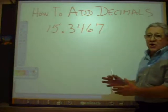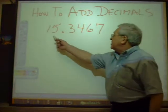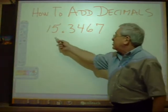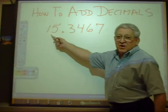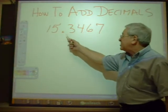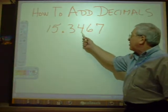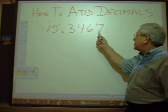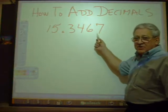If this is 15.3467, this one is in the tens place, the five is in the ones place, the three is in the tenths place, the four is in the hundredths place, the six is in the thousandths place, the seven is in the ten thousandths place.